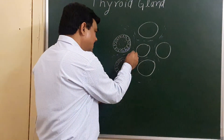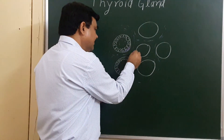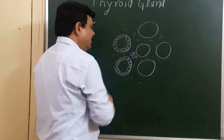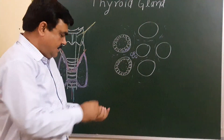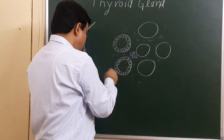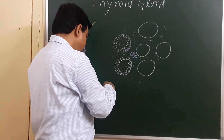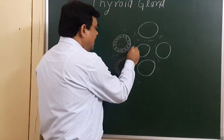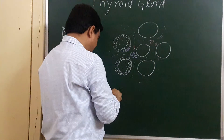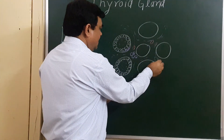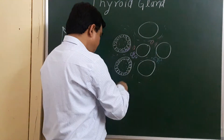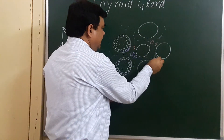These are the connective tissue. Here, numerous blood vessels are present — these are the blood vessels. These are the veins, and this is an artery.